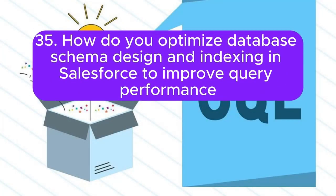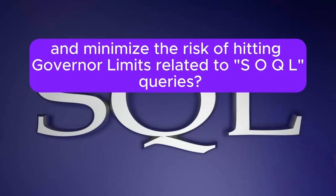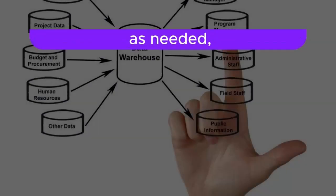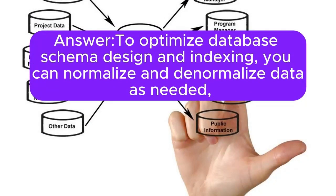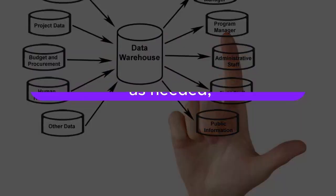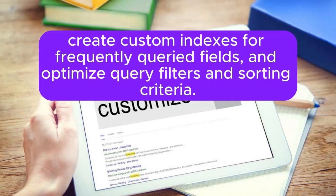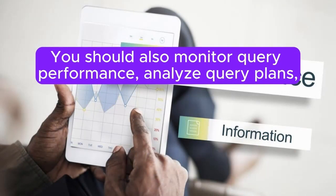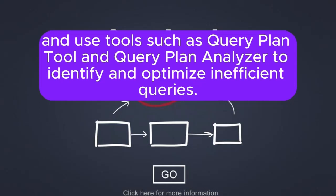Question 35: How do you optimize database schema design and indexing in Salesforce to improve query performance and minimize the risk of hitting governor limits related to SOQL queries? Answer: To optimize database schema design and indexing, you can normalize and denormalize data as needed, create custom indexes for frequently queried fields, and optimize query filters and sorting criteria. You should also monitor query performance, analyze query plans, and use tools such as the Query Plan tool to identify and optimize inefficient queries.